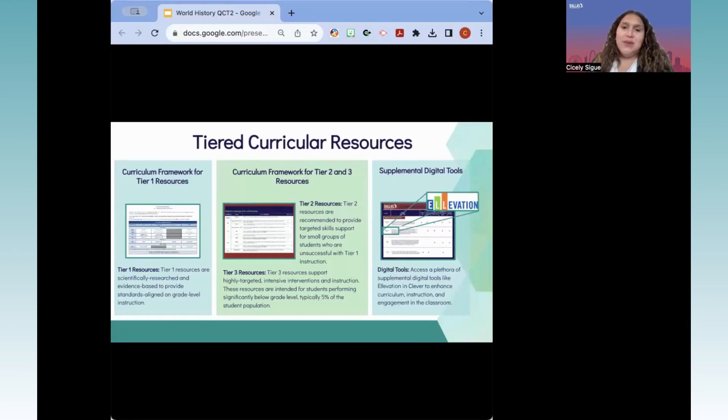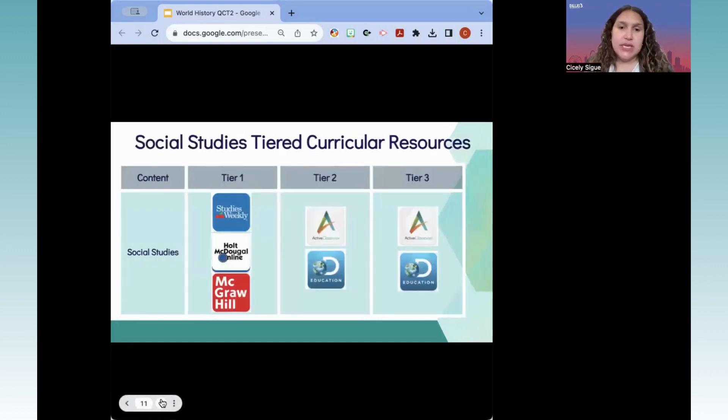Let me take a few seconds and pause for a public announcement. We are defining our tiered resources in the following ways. Tier one resources are scientifically researched and evidence-based to provide standard-aligned or grade-level instruction. Our tier two resources are recommended to provide targeted skills support for small groups of students who are unsuccessful with tier one instruction. And our tier three resources support highly targeted intensive interventions and instruction. These resources are intended for students performing significantly below grade level, typically around 5% of the student population. Additionally, supplemental digital tools are available to enhance your instruction.